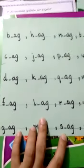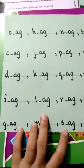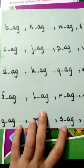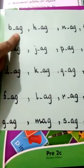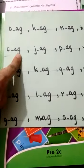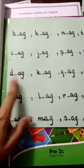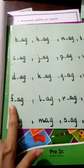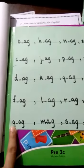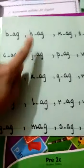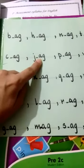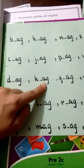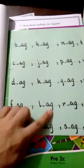Now we will read and trail ag words. Let's start. B, ag, bag. K, ag, kag. D, ag, dag. F, ag, fag. G, ag, gag. H, ag, hag. J, ag, jag. K, ag, kag. L, ag, lag.